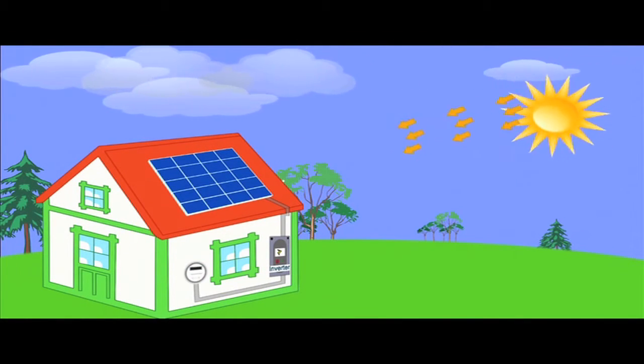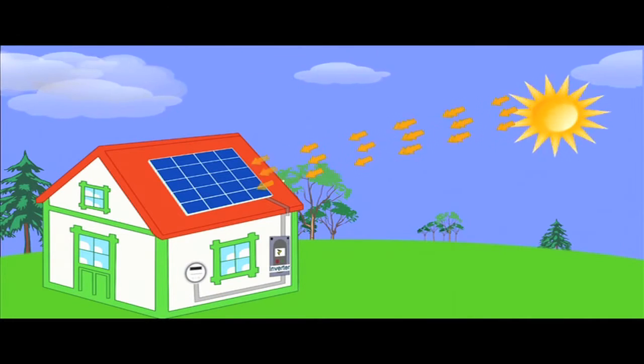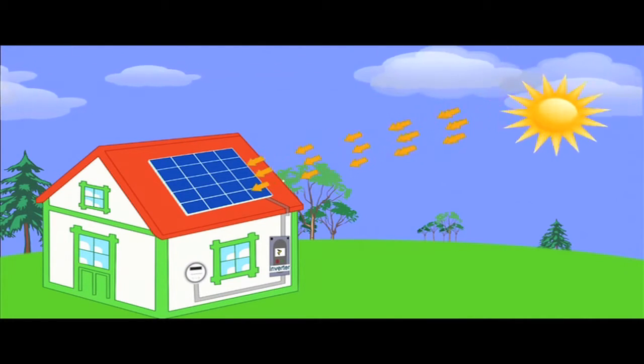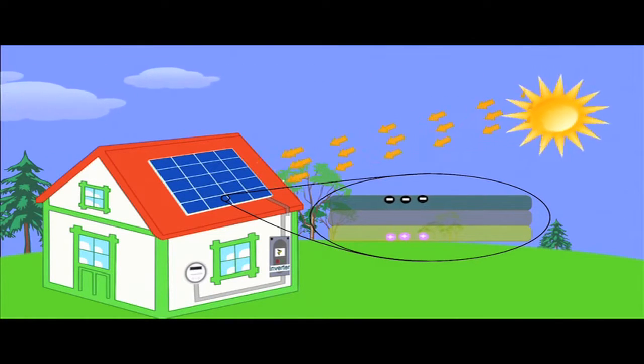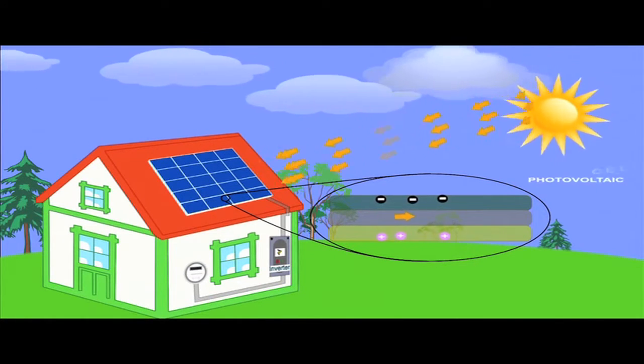Every day, sunlight will stream down onto your solar panels with photons, which are particles of sunlight. Then, the solar panels convert those photons into electrons of electricity using photovoltaic cell technology.